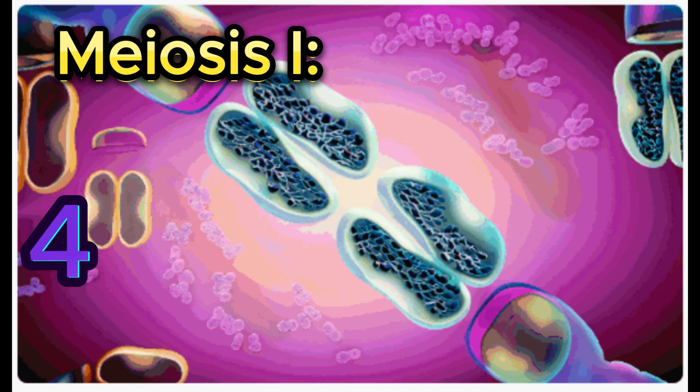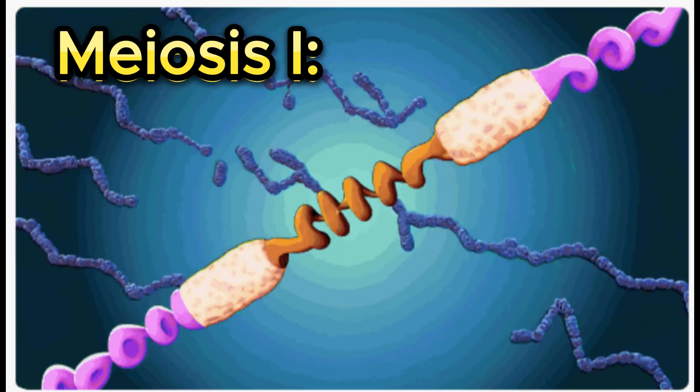Number 4: Anaphase I. Homologous chromosomes separate and move toward opposite poles of the cell.